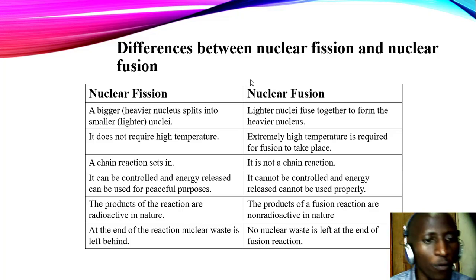Number four, nuclear fission can be controlled and energy released can be used for peaceful purposes. Whereas, in nuclear fusion, the energy release cannot be controlled and that energy release cannot be used properly. Number five, the products in nuclear fission, the products of the reaction are radioactive in nature. Whereas, in nuclear fusion, the products of a fusion reaction are non-radioactive in nature. And finally, in nuclear fission, at the end of the reaction, nuclear waste is left behind. But in nuclear fusion, non-nuclear waste is left behind at the end of the nuclear reaction.